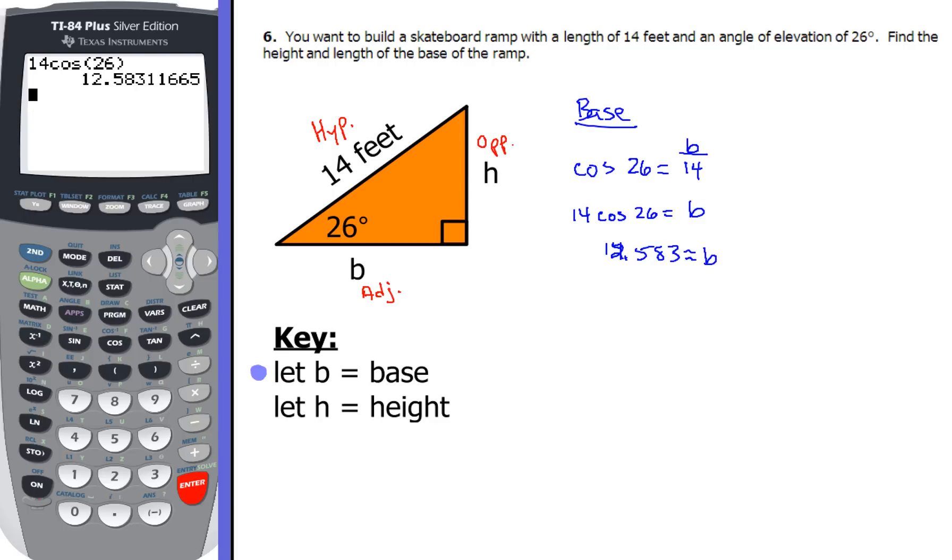Now we'll do a similar thing when we go to find out what the height is. Now for the height, this time where the height is, the height is over here, so I'm looking at the opposite. I'm going to deal with the opposite, and I'm still using hypotenuse. So the opposite and hypotenuse are both going to be using the trig function - which trig function is opposite and hypotenuse? That would be the sine function.